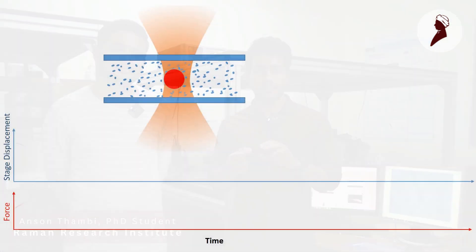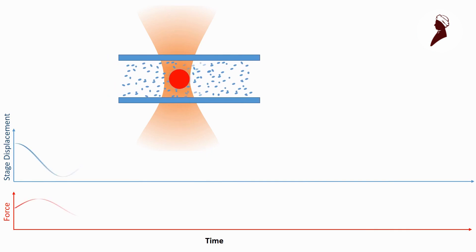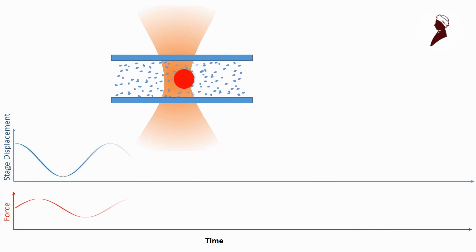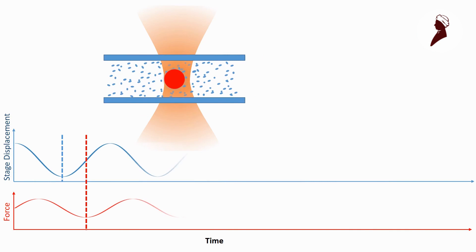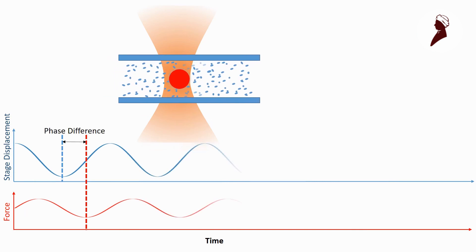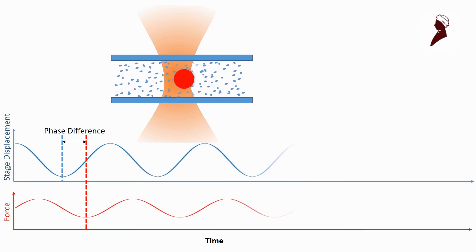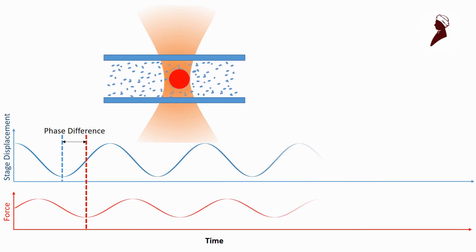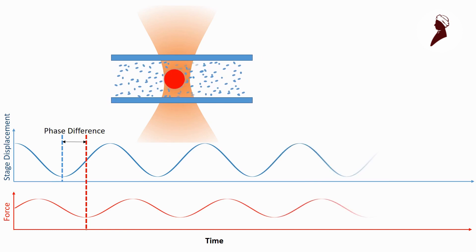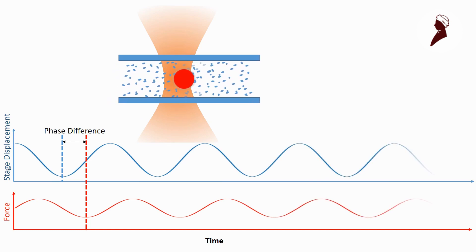Hi, I am Ansan. We have this probe particle trapped in the laponite medium, which is held in a sample cell. We can move the stage back and forth, which causes a motion on the probe particle. But the force experienced by the probe particle will have a phase lag compared to the back and forth motion of the stage. From these responses, we can calculate the micro-mechanical moduli of the laponite suspension.